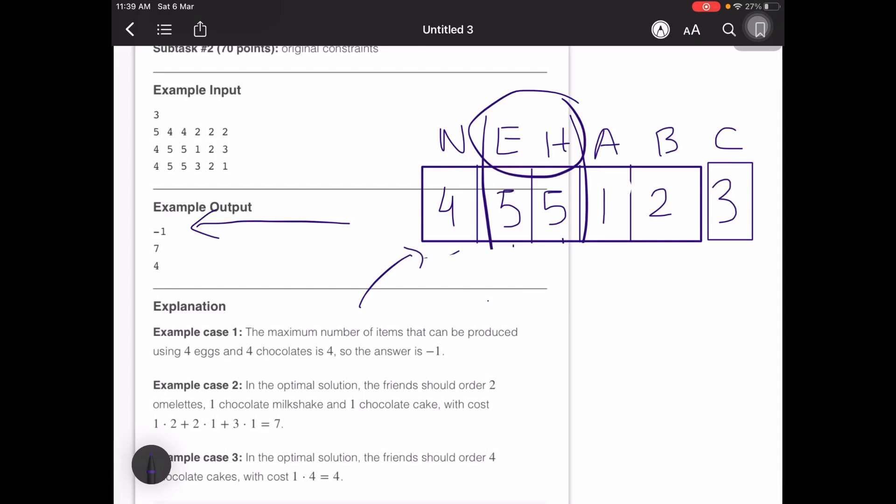Now how do we minimize the cost? What items are we actually going to order? We decide that on the basis of the prices. We have A, B, and C. We will try to push as much as possible - if the price of A is the least, we try to buy as many items of A as possible.